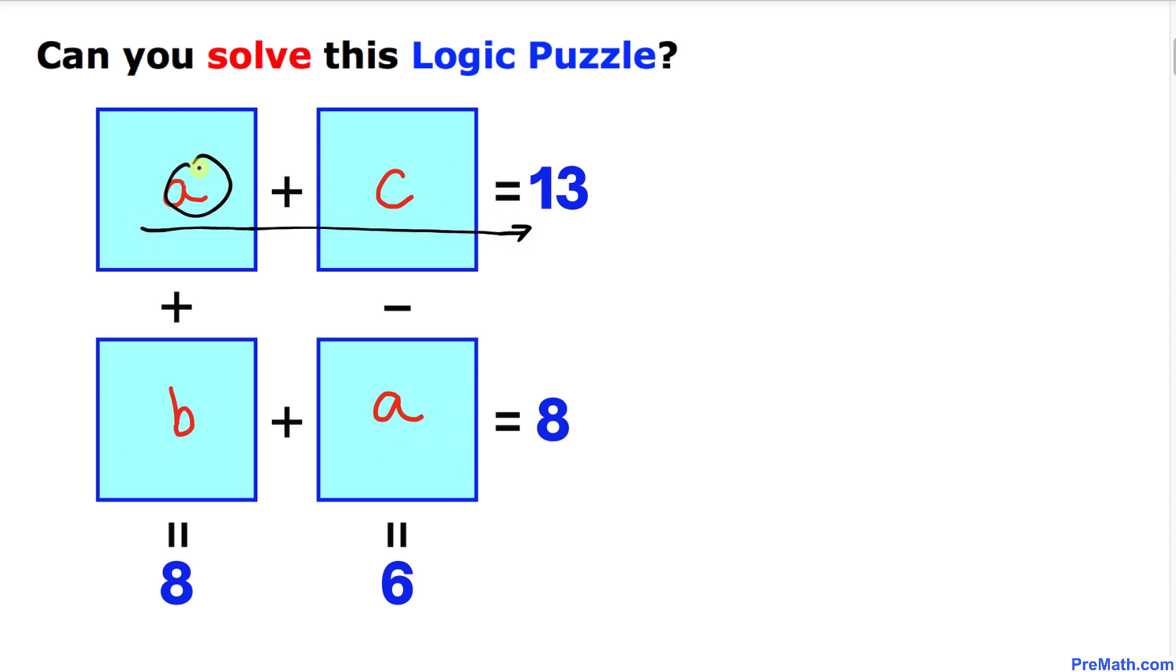That gives us a plus c equals 13. Let me write it down: a + c = 13. Now let's consider the vertical path. That means c minus a equals 6. Let me write that down: c - a = 6. So we have two equations.